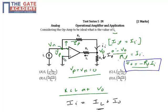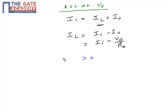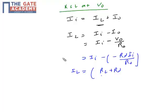So let's put the value of V0 here. It will be II minus of minus RF times II upon R0. So I can rewrite this expression. My IL will be equal to RL plus RF upon R0